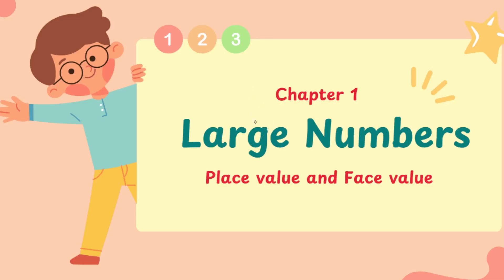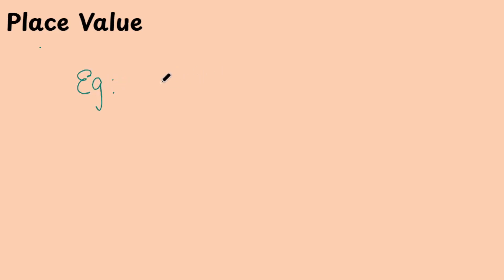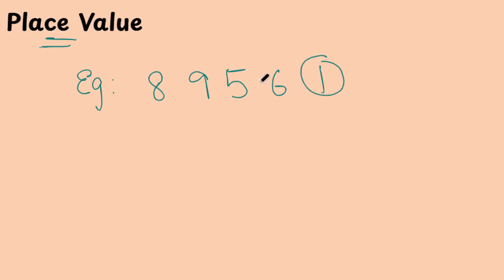The next topic we are going to see is place value and face value. So let's see first of all what is place value. For example, if I give you 8, 9, 5, 6, 1 — this is 89,561. So if I tell you to find the place value, it means you are going to find the value of each digit in a number.